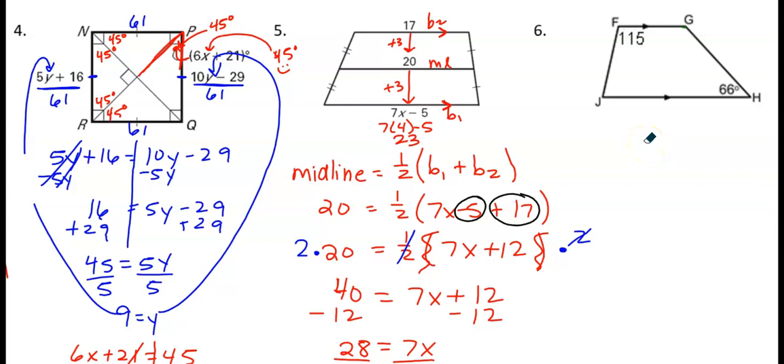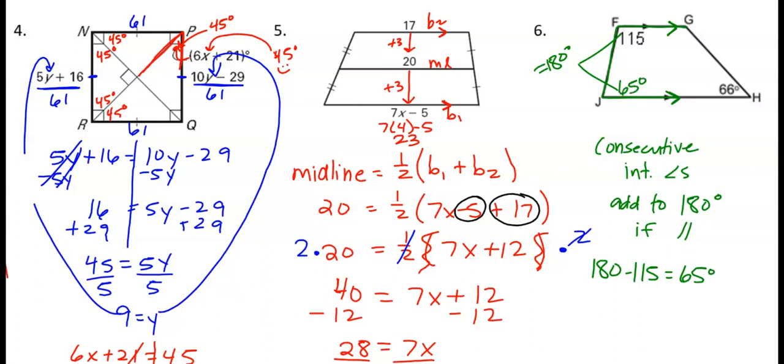So on to number 6 here. This is kind of an easier one, I think. Not a lot of algebra to do here. What we do need to realize is that we're working with a trapezoid that has parallel sides. So what that tells us about the angles is that we have consecutive interior angles. Hopefully you remember that from earlier this year. Consecutive interior angles. And the deal with those is that they add to 180 degrees. They're supplementary if your lines are parallel. And our lines are parallel. So that tells us that these two angles here should add up to 180 degrees. So all we really need to do is 180 take away 115. And that's going to be 65.